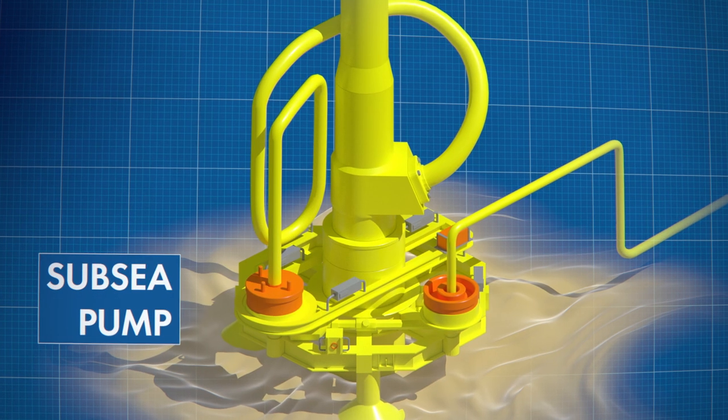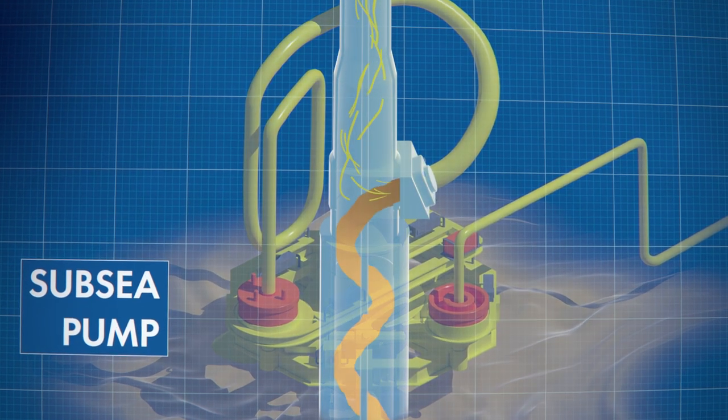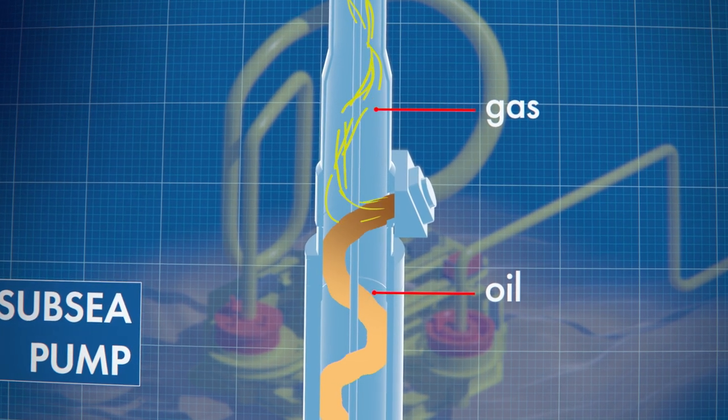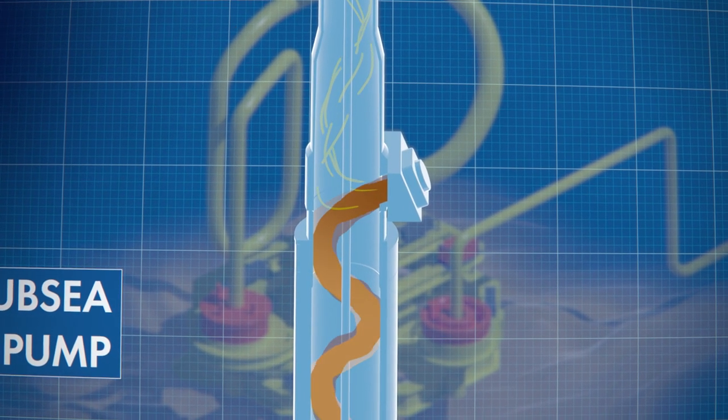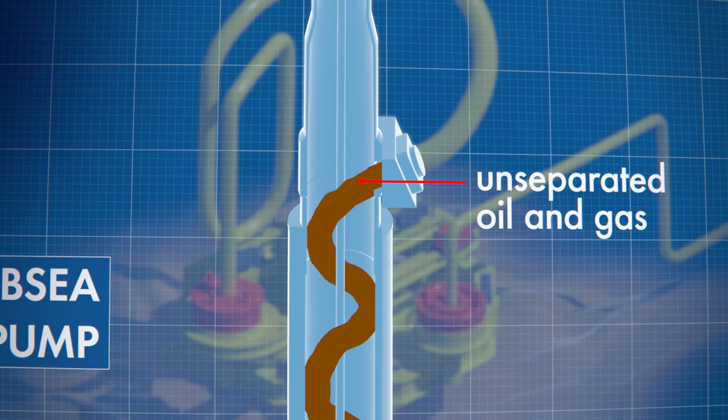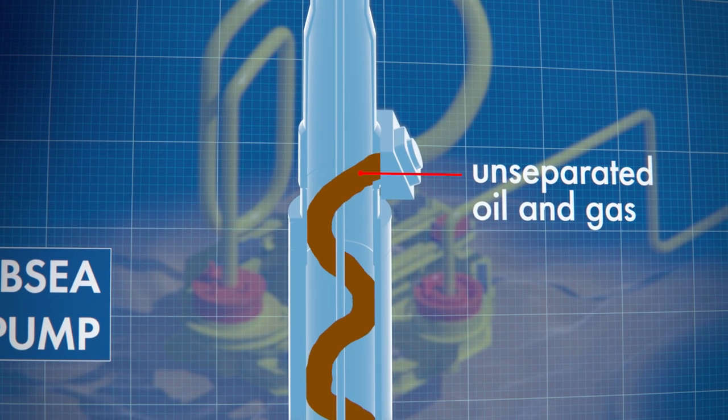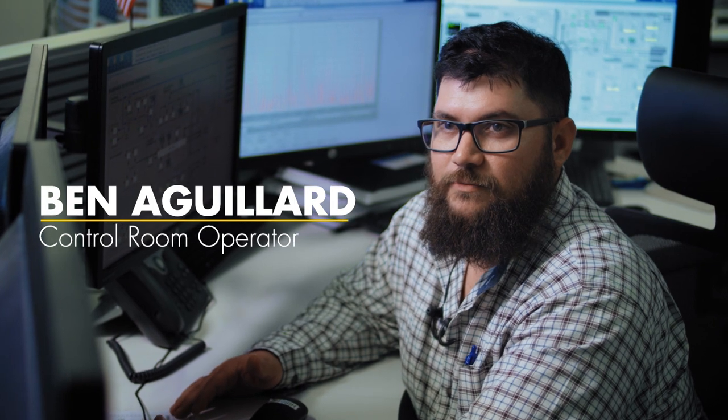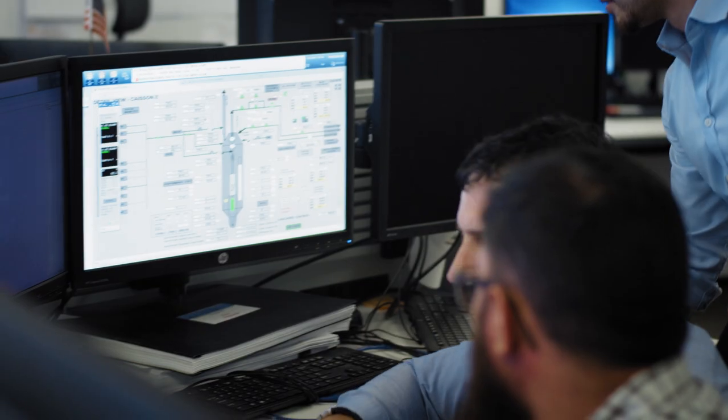8,000 feet below the waves lie Perdido's pumps. Key to production, they separate a mixture of oil and gas that's sent to the surface. But occasionally, the pumps stop separating, causing a complete loss of production. So if we can solve this problem, then we can be more proactive in trying to stop the event before it happens.